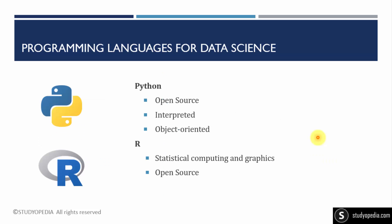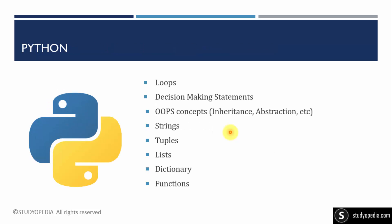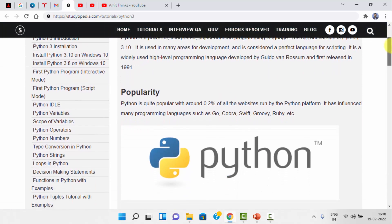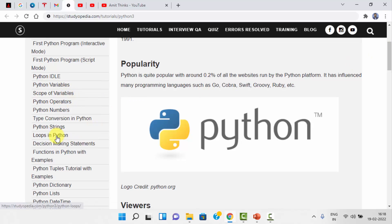For the roadmap of data science — programming languages. You can work with Python or R for data science. Python provides a lot of free and open-source libraries that help in working with data science. Python is an object-oriented, open-source language. To begin, you can start with the basics: loops, decision-making statements — similar to C++ and Java — then strings, tuples, lists, and dictionaries, which you can relate to arrays or collections in Java.